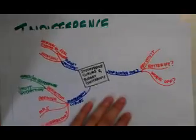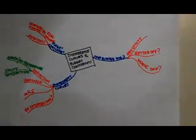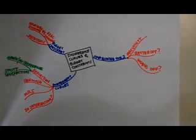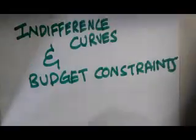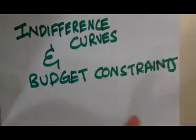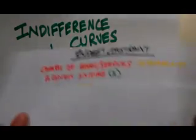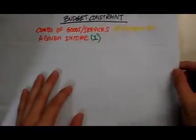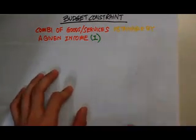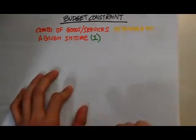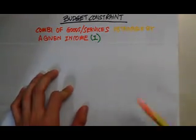This is the mind map for today. Just a little reminder — go download this on the website for your revision purposes. Now, what is a budget constraint? A budget constraint is a combination of goods and services obtainable by a given income.